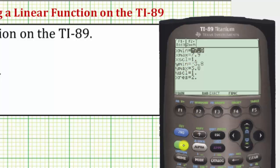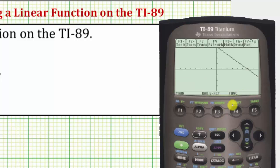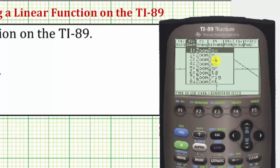Let's go back to the graph one last time by pressing second F3. One way to change the window without losing the zoom decimal setting would be to zoom out. So let's go ahead and press F2, and then F3 for zoom out.